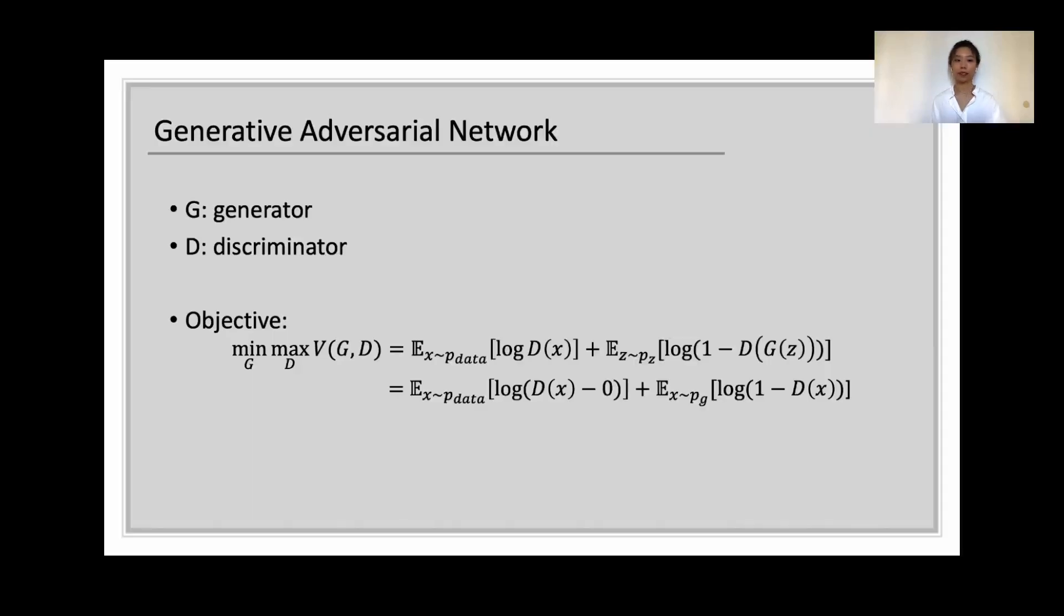Just to recap, GAN is a generative model consisting of a generator and a discriminator playing a zero-sum game, where D tries to distinguish generated samples from the real ones and G learns to fool D.